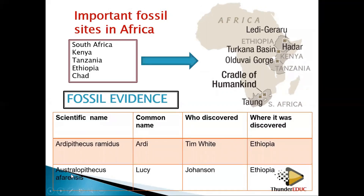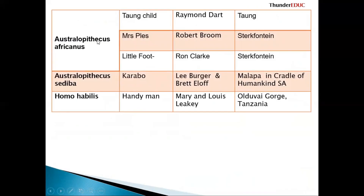We have Australopithecus afarensis — this one is called Lucy. The person who discovered it is Johansson, who discovered it in Ethiopia. Those people who watched the movie called Lucy can even see how life tried to evolve.